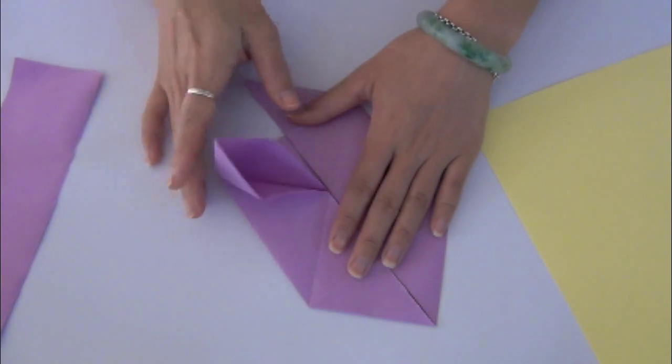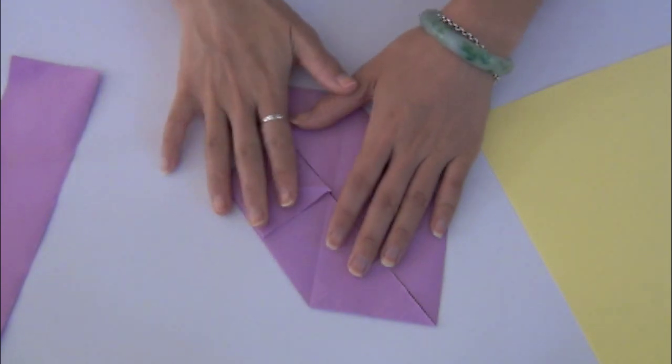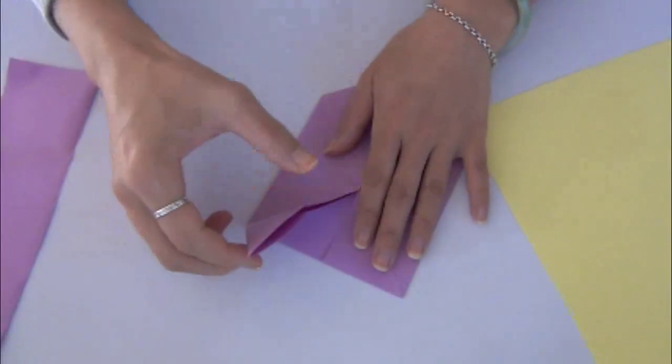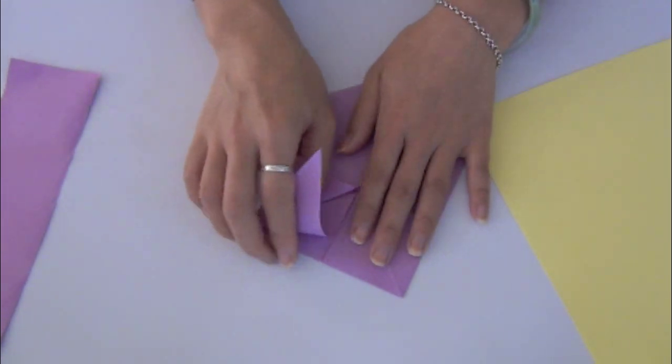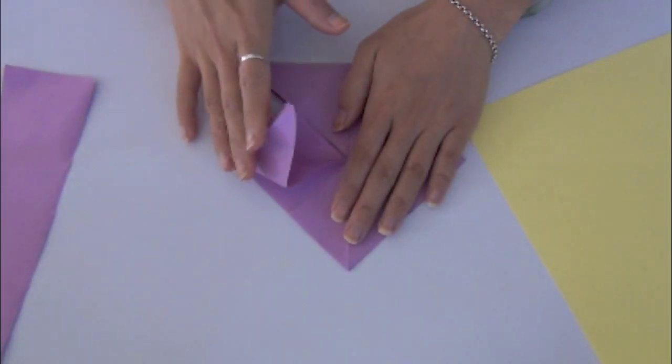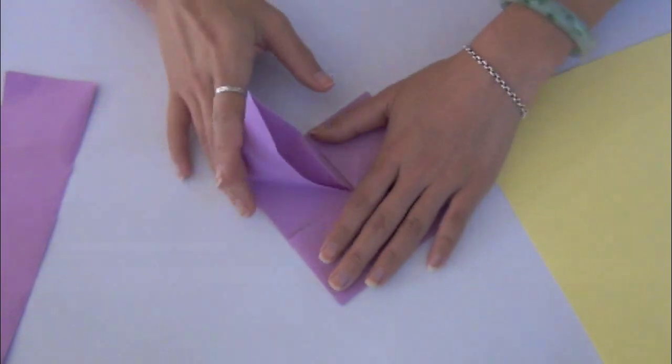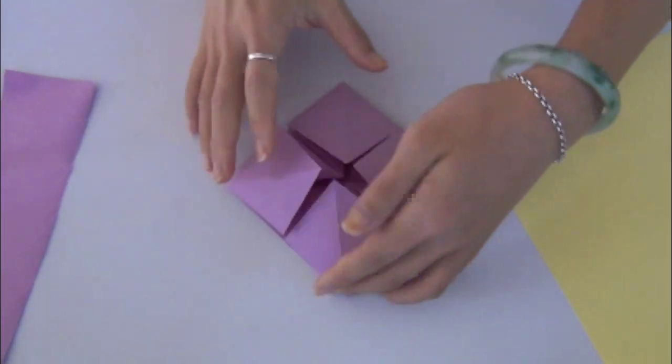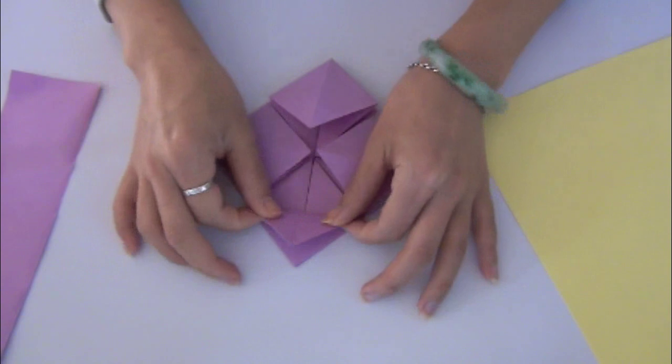Well, if you take one of the flaps, you'll notice it turns into like a little pouch and you can just push it down to form it into a square. Repeat the same process to the rest of the flaps.